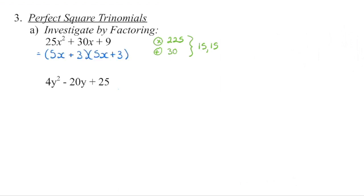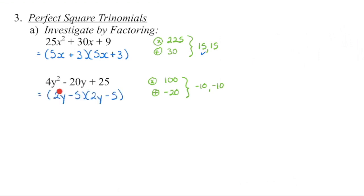So we set up our two binomials. What times what gets us back to 25x squared? Then 5x times what gives us 15 — that's going to be a 3. Fill that in. Then 5 times what gives the other 15 — also a 3. For the next one, there is no greatest common factor, and the first and last terms are perfect squares. Are there two numbers that multiply to 4 times 25 (which is 100) and add to negative 20? Yes — negative 10 and negative 10.